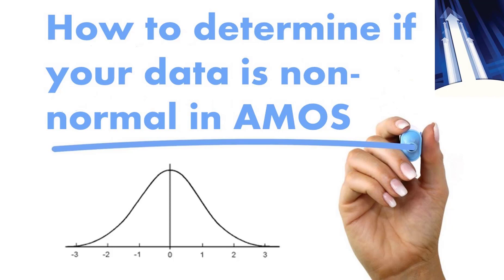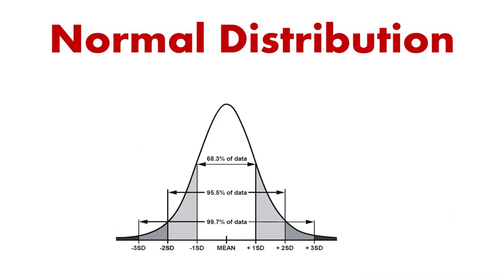One of the fundamental assumptions of AMOS is that your data is normally distributed. Before we jump into determining if your data is actually non-normal in AMOS, I thought it would be a good idea to briefly talk about what it means to be non-normal from a data perspective.